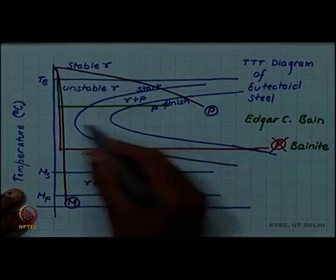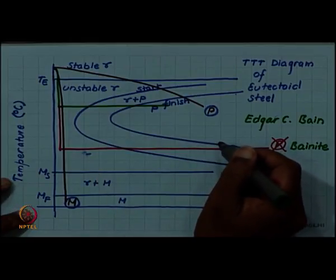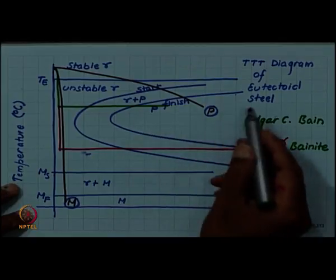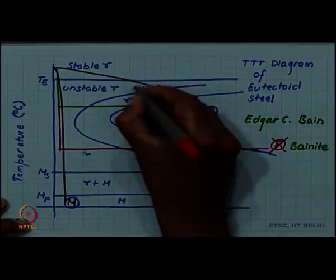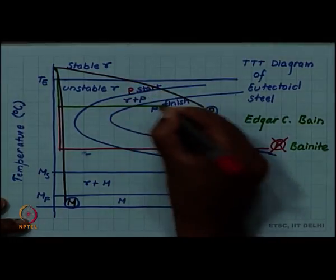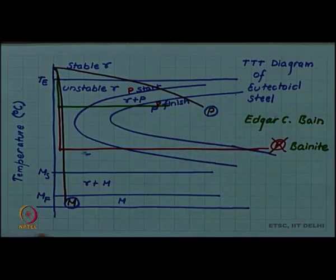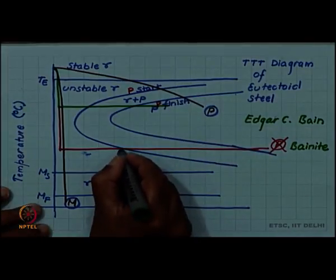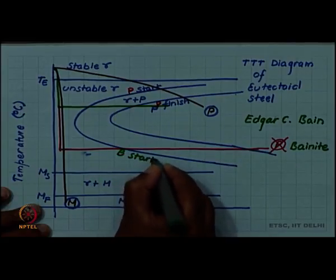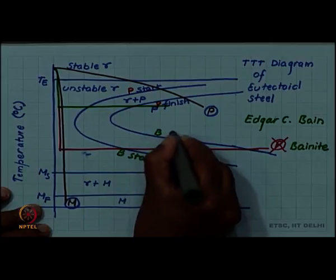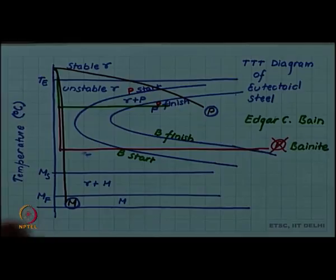Really, the start curve and finish curve below the nose are Bainite start and Bainite finish instead of pearlite start and pearlite finish. We can now label these start curves as pearlite start and pearlite finish, whereas these are Bainite start and bainite finish.